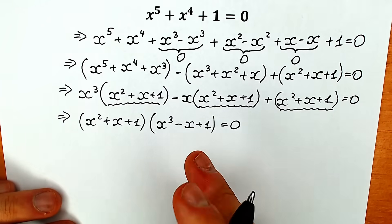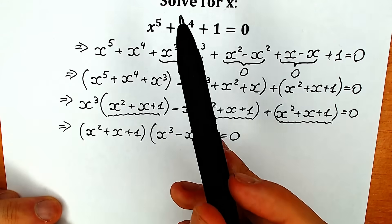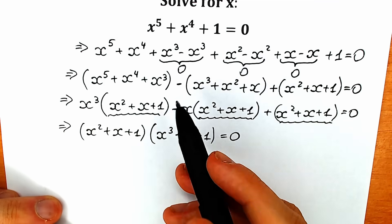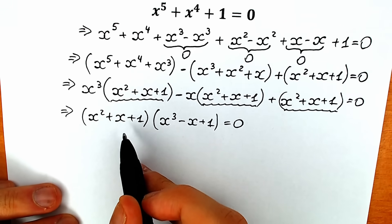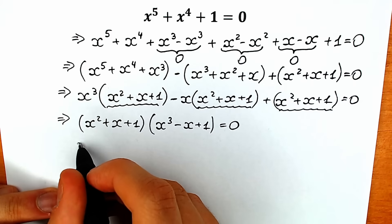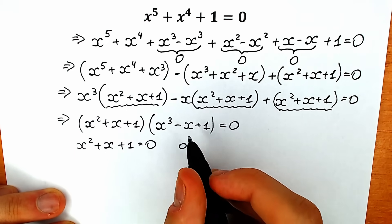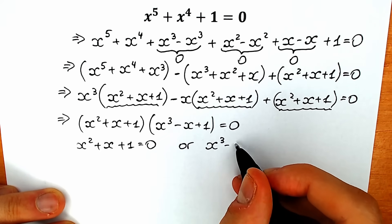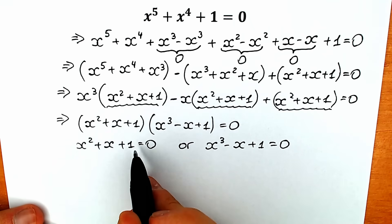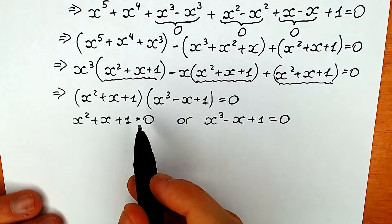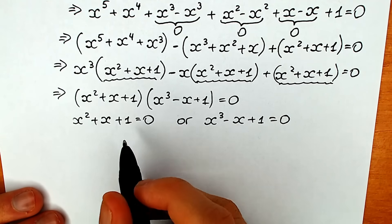As you can see, we factored our question and it's much easier now. We had x to the fifth power before, which was more complicated. A product equals zero when either factor equals zero. So we have x square plus x plus one equal to zero, or x cube minus x plus one equal to zero. Let's start with the quadratic equation, which is much easier than the cubic.